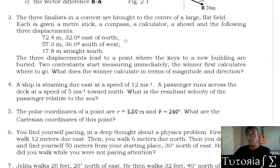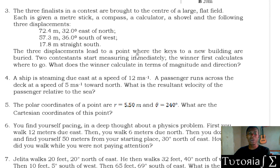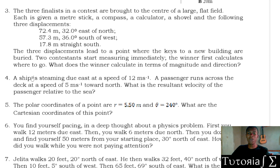In this lesson we are looking at the resultant vector. We start with question number three, which reads: the three finalists in a contest are brought to the center of a large flat field. Each is given a meter stick, a compass, a calculator, a shovel, and three displacements. These three displacements lead to a point where the keys to a new building are buried. The winner first calculates where to go. The question asks: what does the winner calculate in terms of magnitude and direction? Basically, we need to find the resultant of the three displacements.